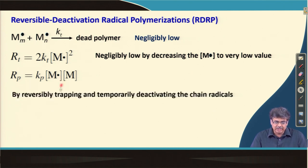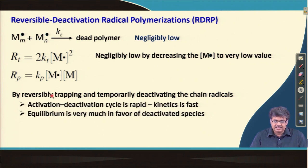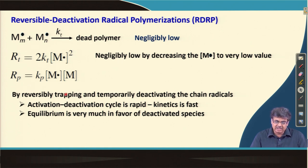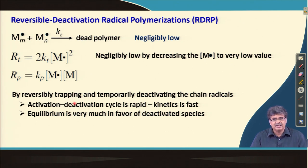So, what is the way out? The way out is by reversibly trapping and temporarily deactivating these chain radicals. By reversible trapping and temporarily deactivating the chain radicals, we can decrease the concentration of propagating radicals. This reversible activation-deactivation cycle must be very rapid, so the kinetics must be very fast. And at any point in time, the equilibrium should be towards the deactivated species, so that effectively a radical spends more time as a deactivated species rather than an active species.